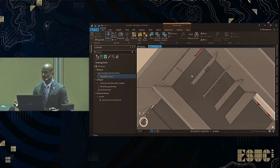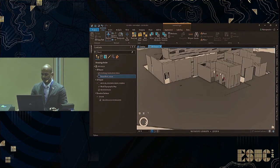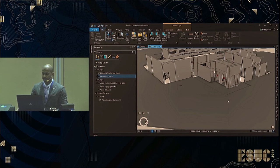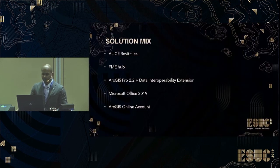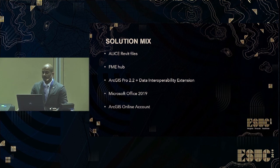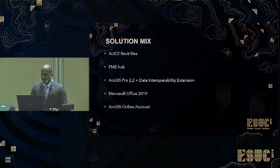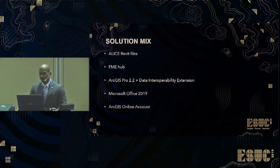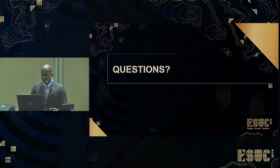That brings me to the end of my demo. For the solution mix, I used Revit files for our new office building at LSZ Mediapolis. Some custom transformers from FME Hub were also used for data validation. The version of ArcGIS Pro used is 2.2, though the current version is 2.4, with the data interoperability extension. Microsoft Office was used as an input file, along with an ArcGIS Online account for the base map shown in ArcGIS Pro. Thank you for your patience.